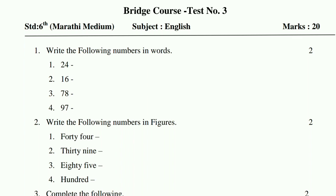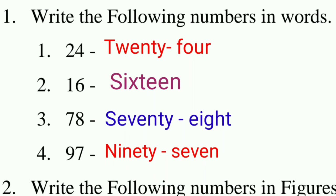Question 1: Write the following numbers in words. The numbers given are: twenty-four, one hundred, sixteen, seventy-eight, and ninety-seven. Write the spellings for these numbers.